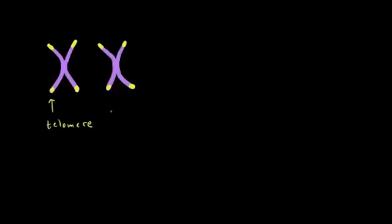And telomeres are mainly found in eukaryotic chromosomes because usually prokaryotes just have one circular chromosome, so it doesn't have any ends.